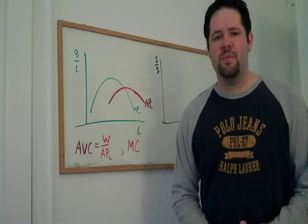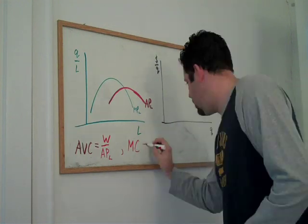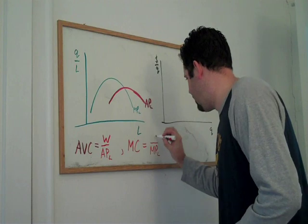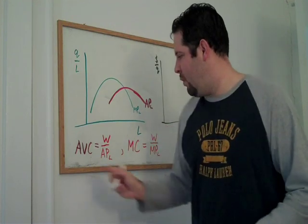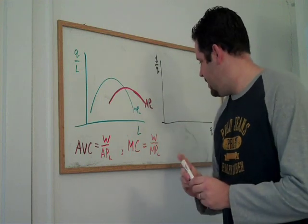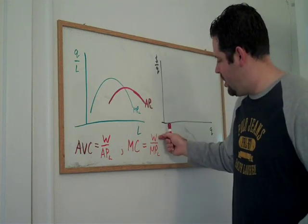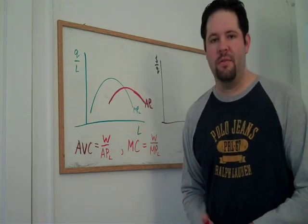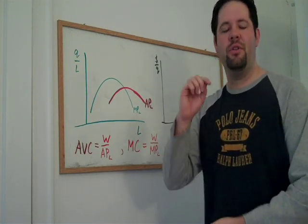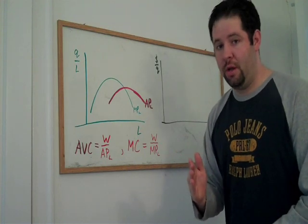We can also derive an expression for marginal costs. We can use the same form as average variable costs, except it's the wage divided by the marginal product of labor. The marginal cost is the cost of producing one more unit of output.